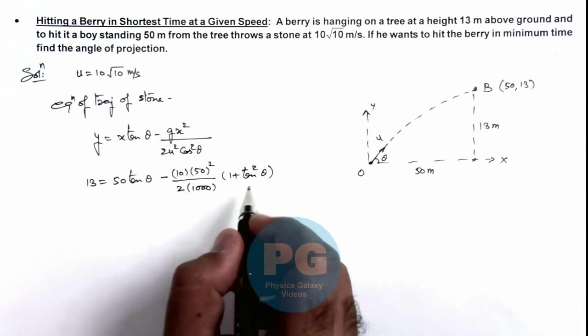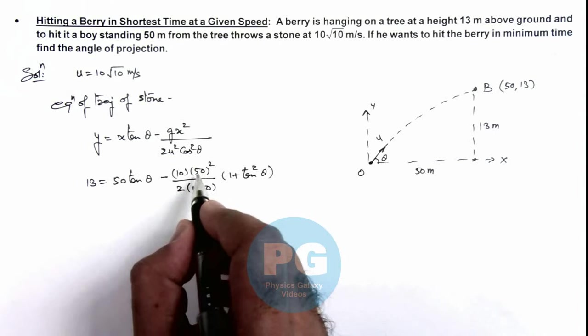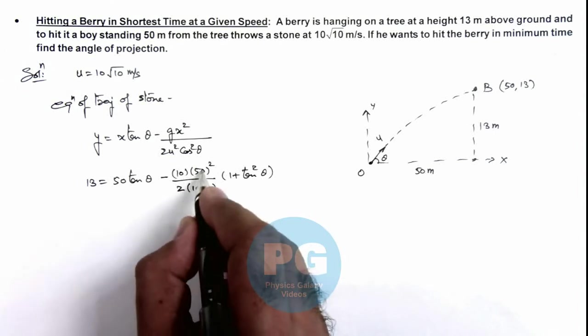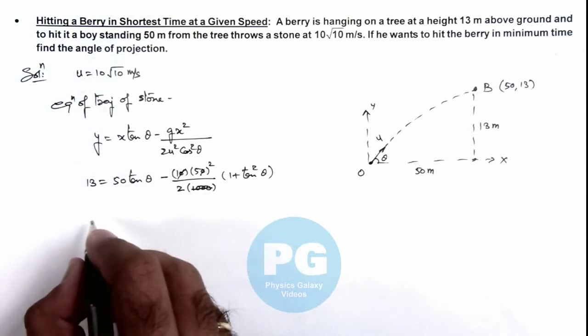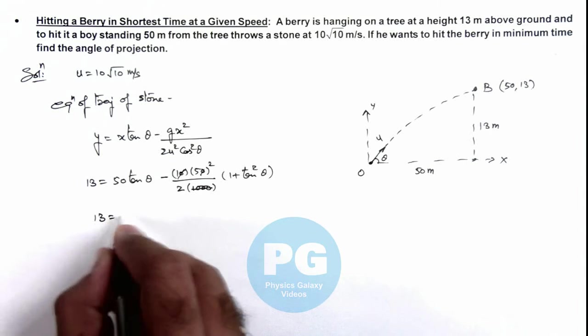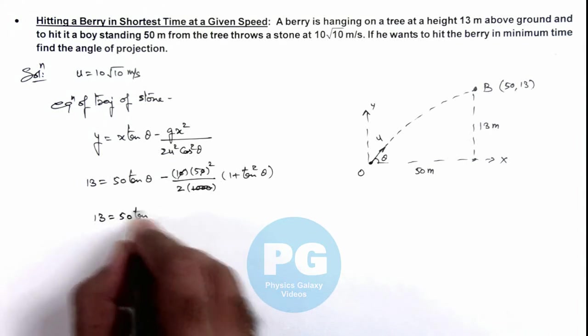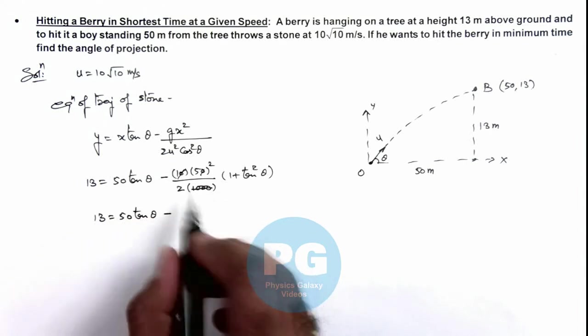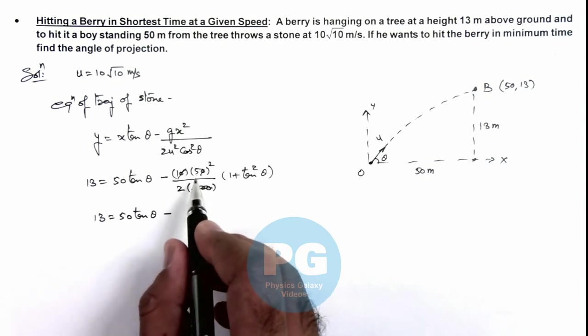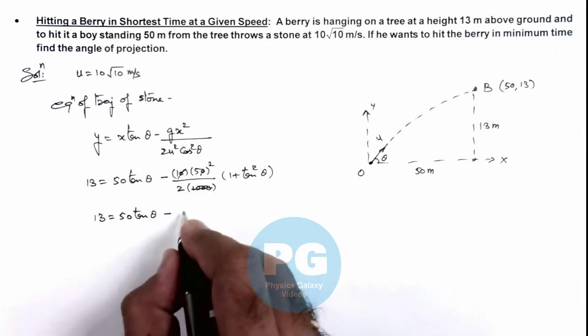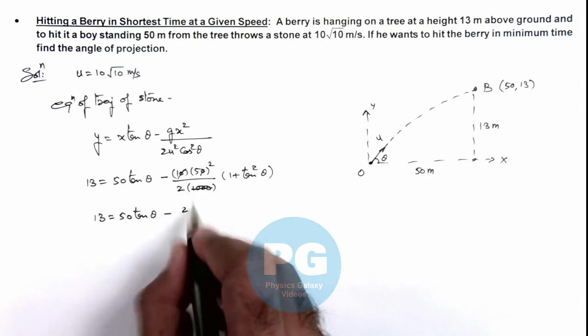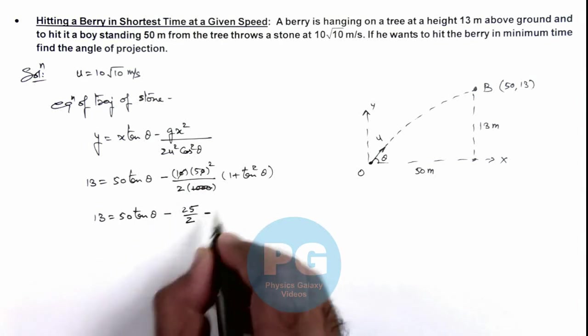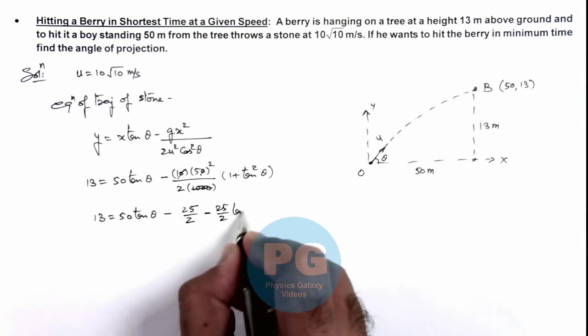And in this situation, if we simplify this relation, here you can see this will be 2500, so here this thousand gets cancelled out. So on simplifying this relation we are getting it as 13 equals 50 tan theta minus, and this value will be 2500 divided by 2. So we can also simplify this relation, this gets cancelled out, this 25 divided by 2, minus 25 by 2 tan squared theta.